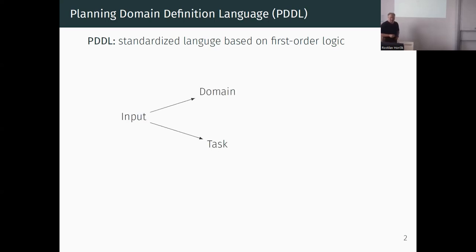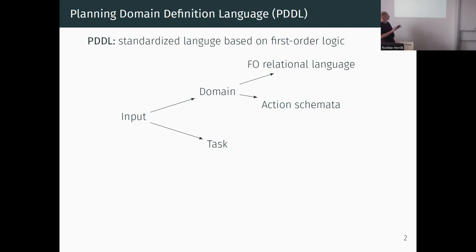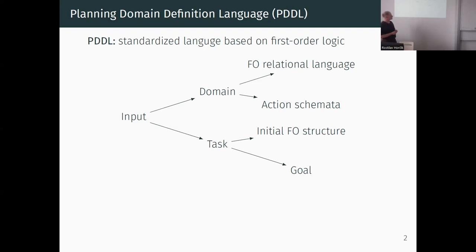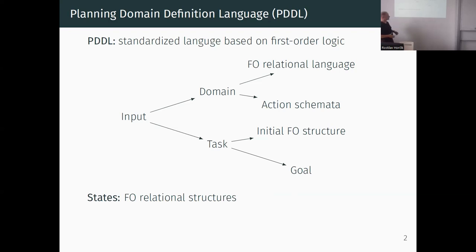The PDDL input is given in two parts. The first part describes the domain of your planning situation. Everything is based on first-order logic - the domain is described by means of a first-order relational language, with predicates, arities, and so on. The transitions are given by action schemata. The states of the system are actually first-order relational structures.